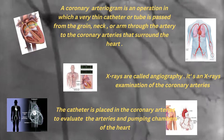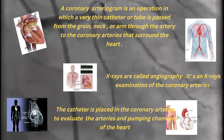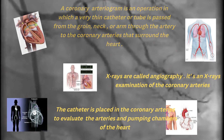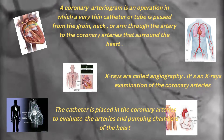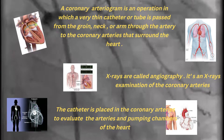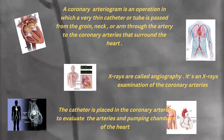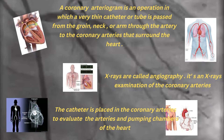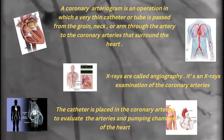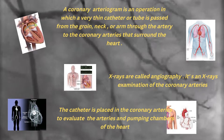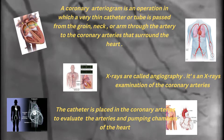Another procedure is the coronary arteriogram: a very thin catheter or tube is passed from the groin, neck, or arm through the artery to the coronary arteries surrounding the heart. The doctor uses the catheter to inject a contrast medium into the blood of the coronary arteries, which shows up on X-ray and highlights the coronary arteries — these X-rays are called angiography. It is an X-ray examination of the coronary arteries used to evaluate the arteries and pumping chambers of the heart.